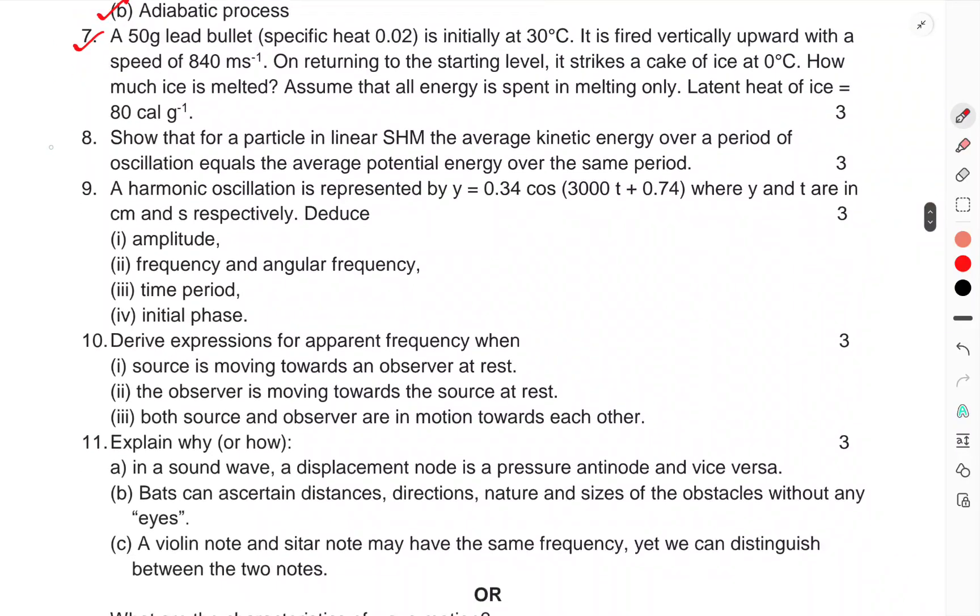Question 8. Show that for a particle in linear SHM, the average kinetic energy over a period of oscillation equals the average potential energy over the same period.